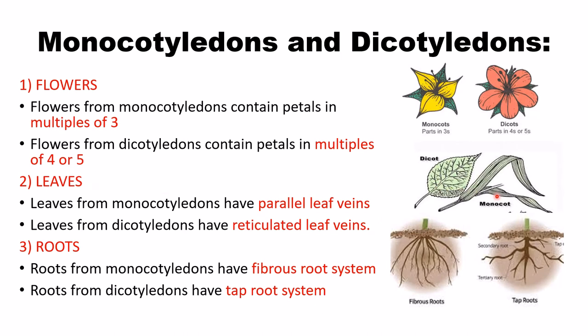If you look at the leaves of monocot and dicot: monocot leaves have parallel veins, while dicot leaves have reticulate (network/webbed) veins. Comparing root systems: monocots have a fibrous root system, while dicots have a tap root system.